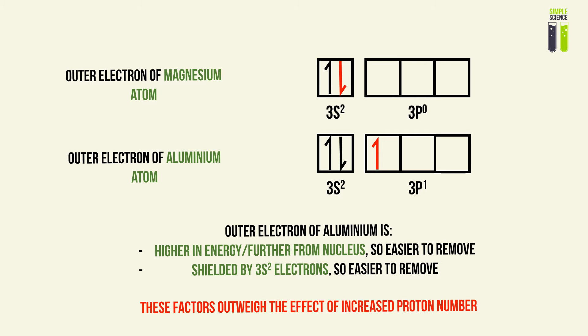If you remember or fix in your head what I have written onto this slide, I will guarantee you the marks for a question such as why is the first ionization energy of aluminum less than that of magnesium. You must write what I've highlighted in red: these factors outweigh the effect of increased proton number. It is much clearer for the examiner to understand.